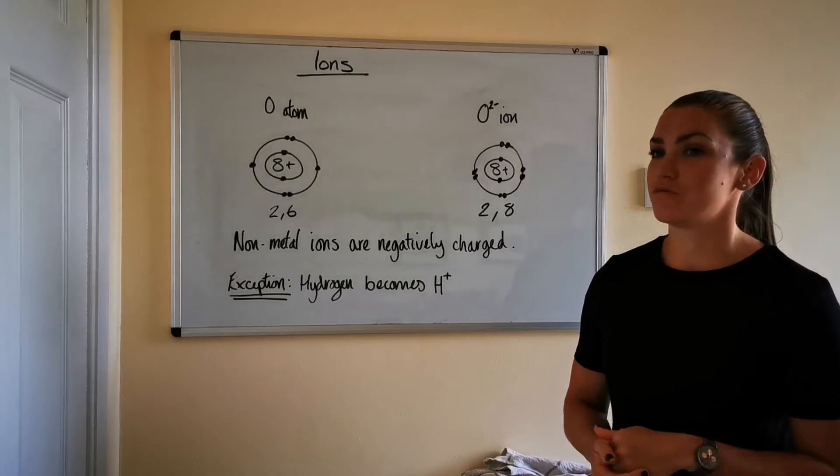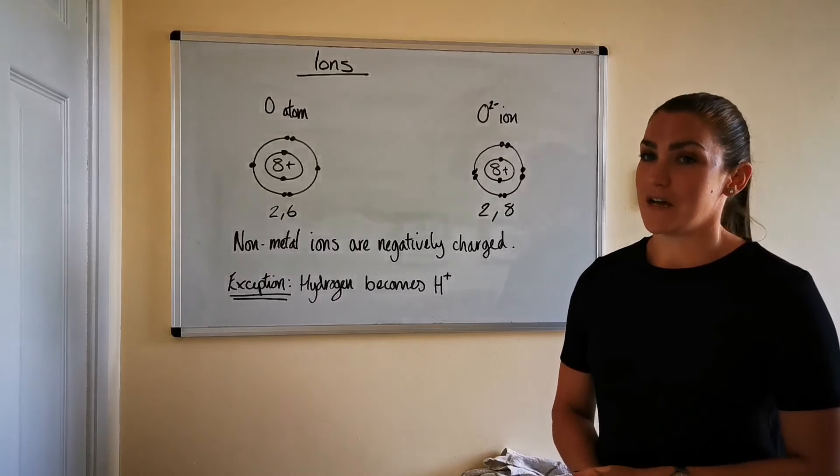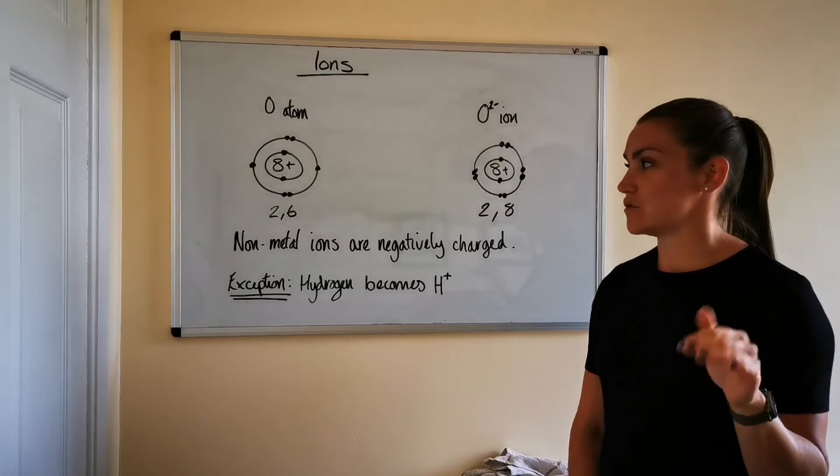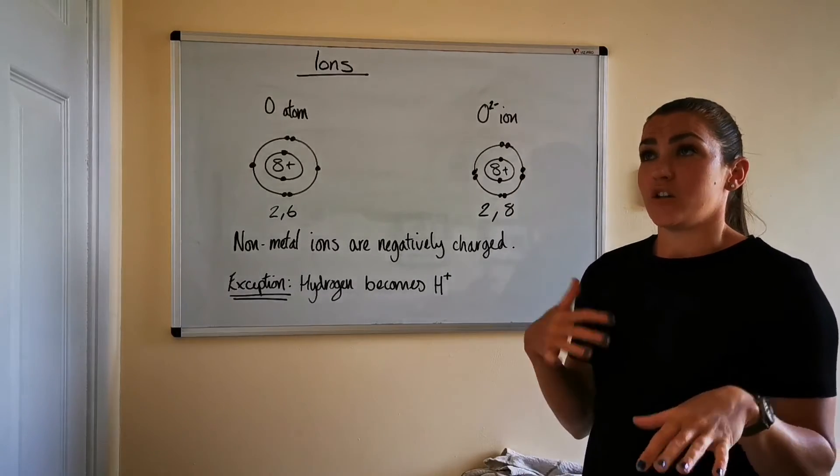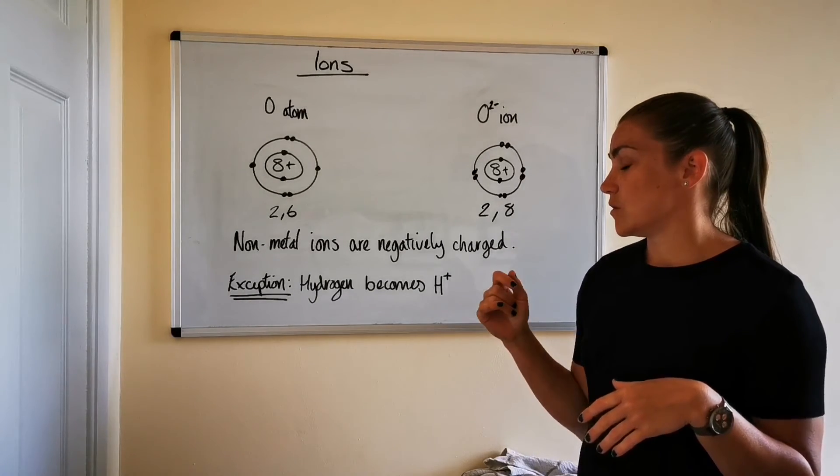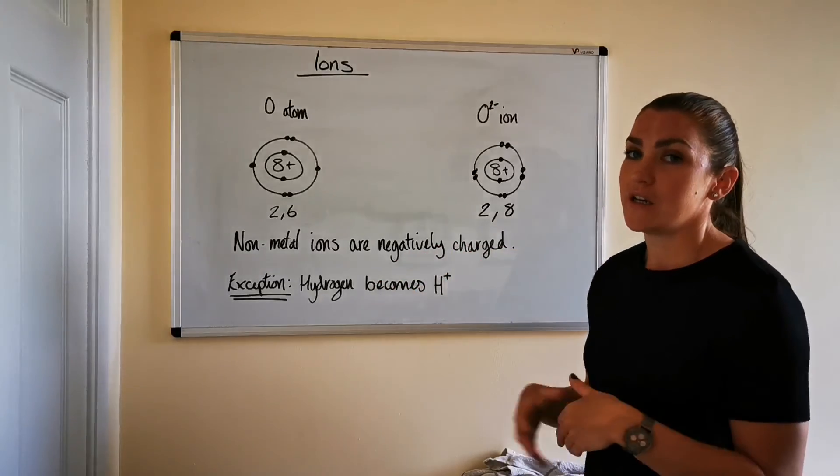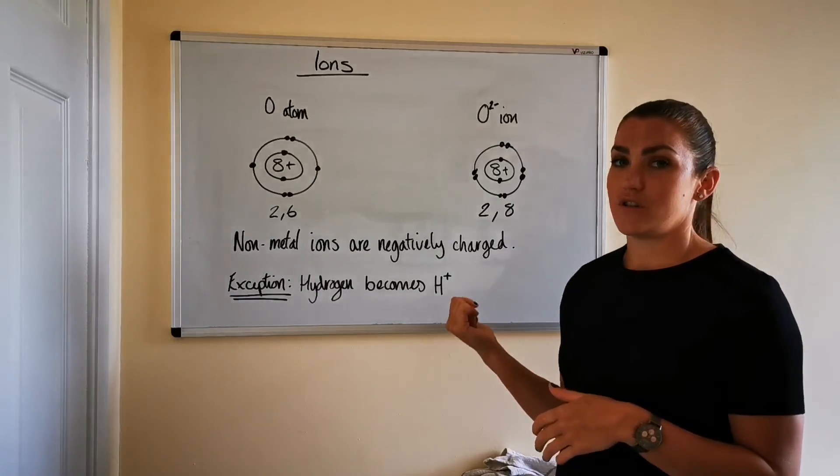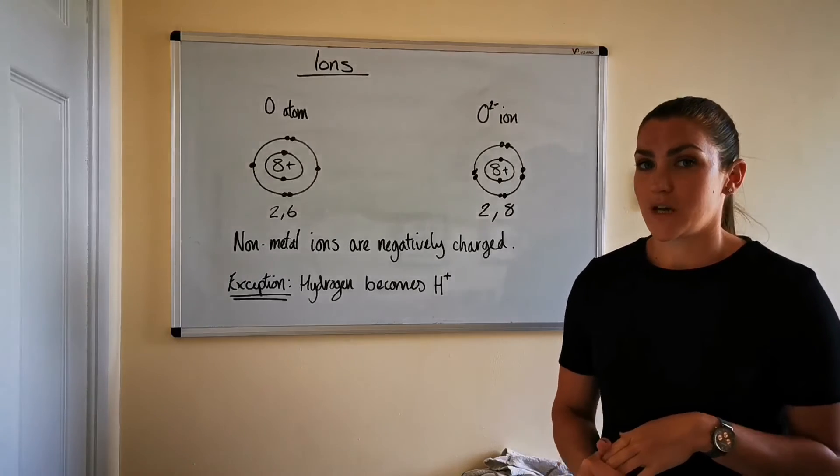So as with most rules there are exceptions and there is an exception to this metal ions are positive, non-metal ions are negative rule and the exception is hydrogen. So hydrogen is a non-metal atom however we know that it's actually on the metal side of the table it's above the alkali metals group one and there are it could also be placed above group seven the halogens but based on partly this exception here it's above group one the alkali metals because it does form a positive ion.